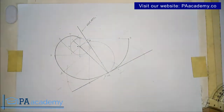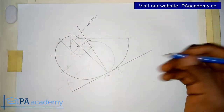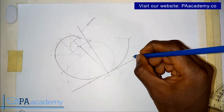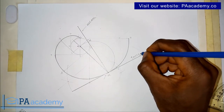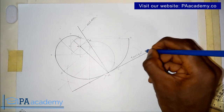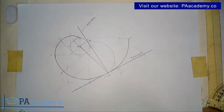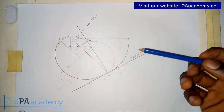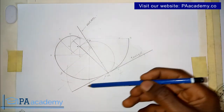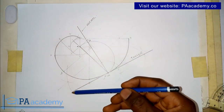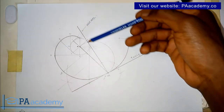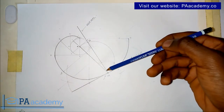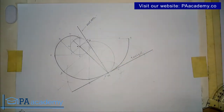This line here represents our tangent — let me label it. So this line coming through like this is the tangent, and this other line is the normal. This is how you go about drawing a tangent or a normal to an involute.